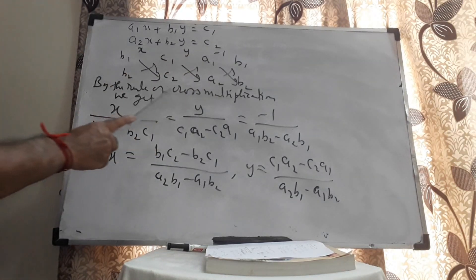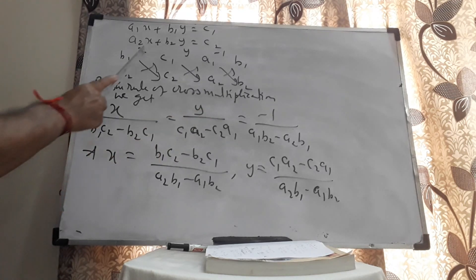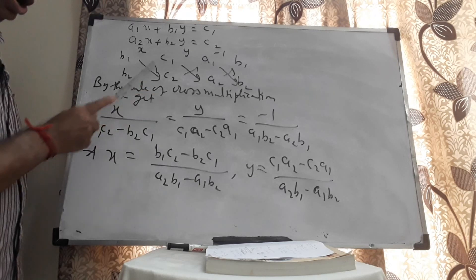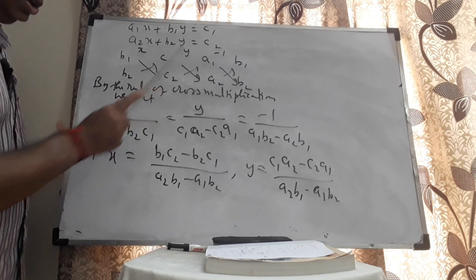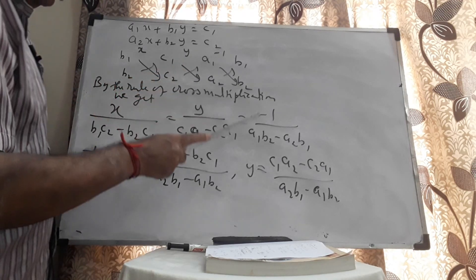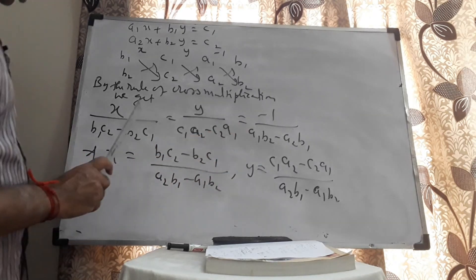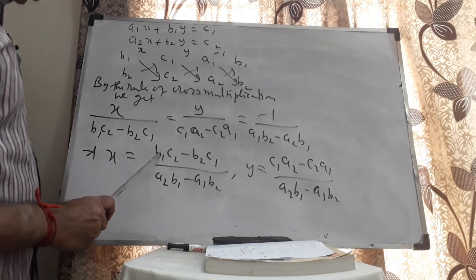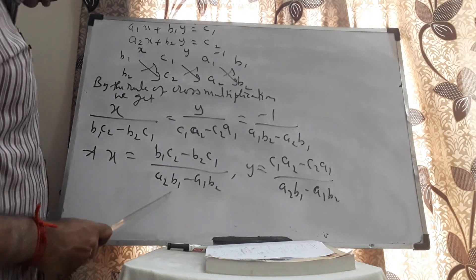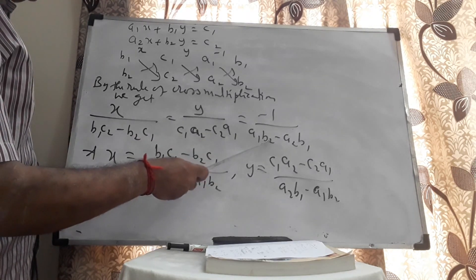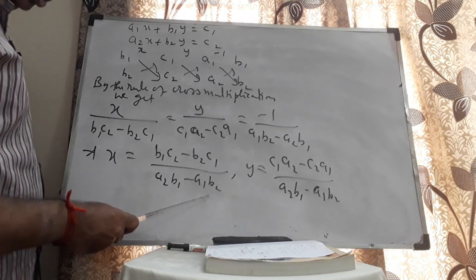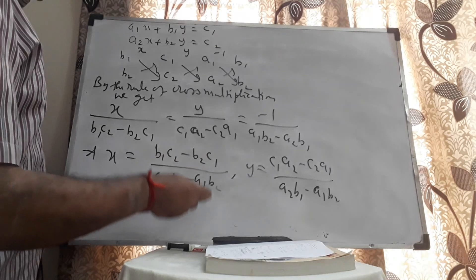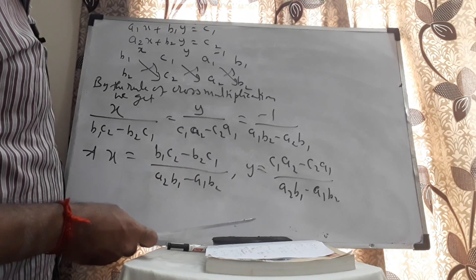I will put arrow marks like this. By the rule of cross multiplication we get: x divided by (B1·C2 minus B2·C1), equals y divided by (C1·A2 minus C2·A1), equals minus 1 divided by (A1·B2 minus A2·B1). Taking the first and third ratios, x equals (B1·C2 minus B2·C1) divided by (A2·B1 minus A1·B2). Similarly, y equals (C1·A2 minus C2·A1) divided by (A2·B1 minus A1·B2).